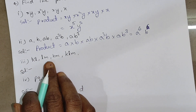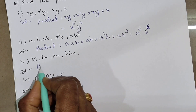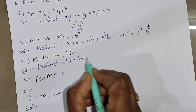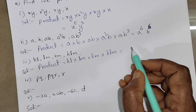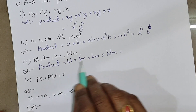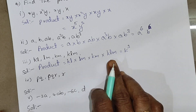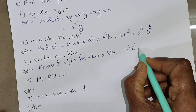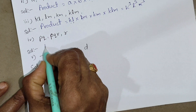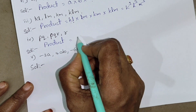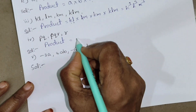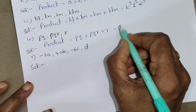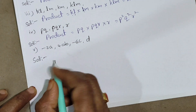Third one: kl, lm, km, klm. Product equals kl into lm into km into klm. Collecting k: three k's gives k cubed. Collecting l: three l's gives l cubed. Collecting m: three m's gives m cubed. Product is k cubed l cubed m cubed. Fourth one: pq, pqr, r. Product equals pq into pqr into r. That gives p squared q squared r squared.